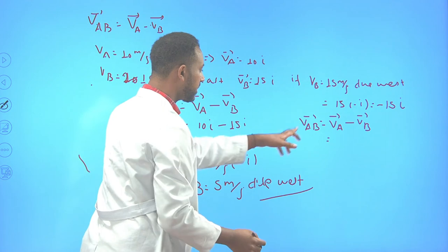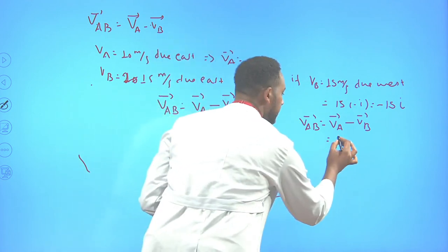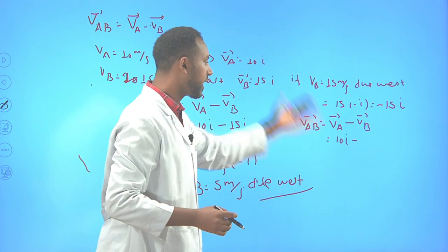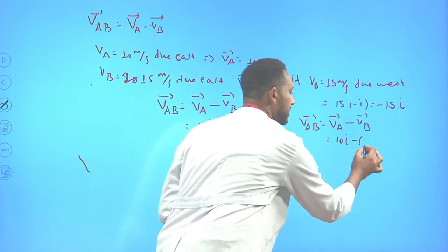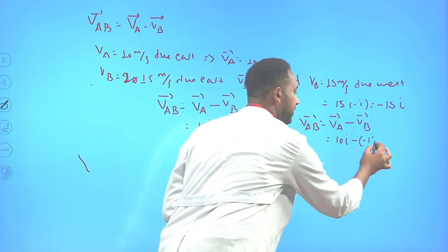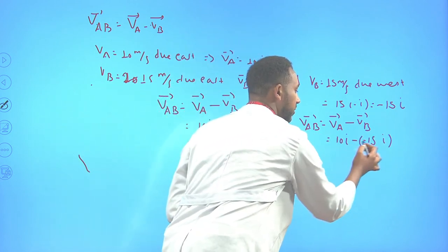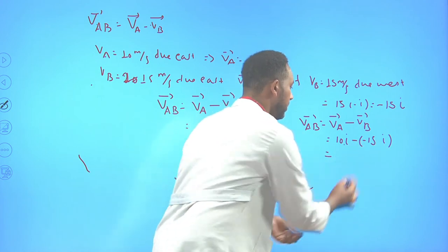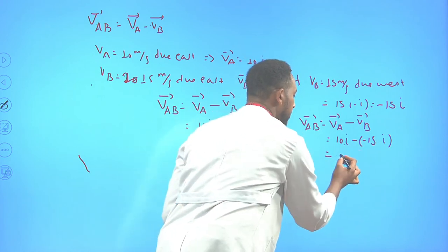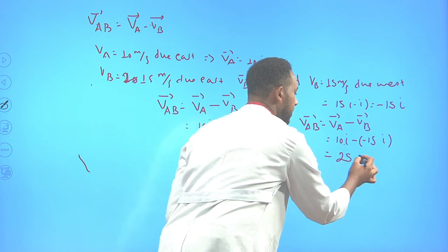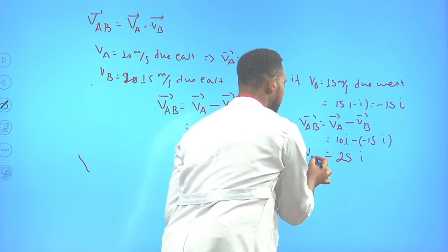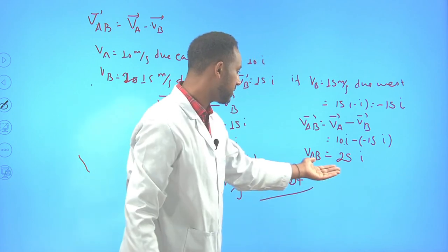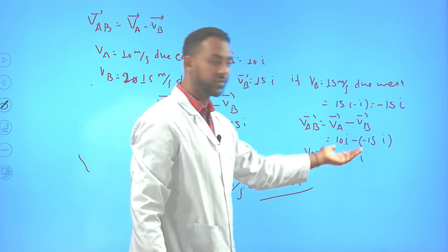The vice versa is also possible — find the relative velocity of car B with respect to car A: V_BA = V_B − V_A = −15î − 10î = −25î. It is also possible to use î and ĵ if a car is heading due north; the resultant would be √(10² + 15²).